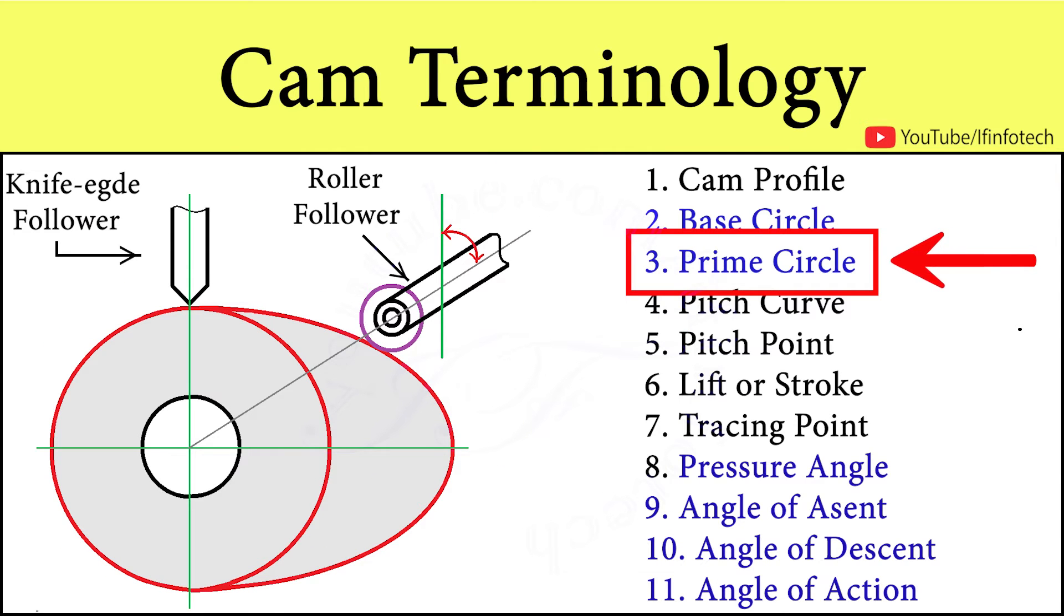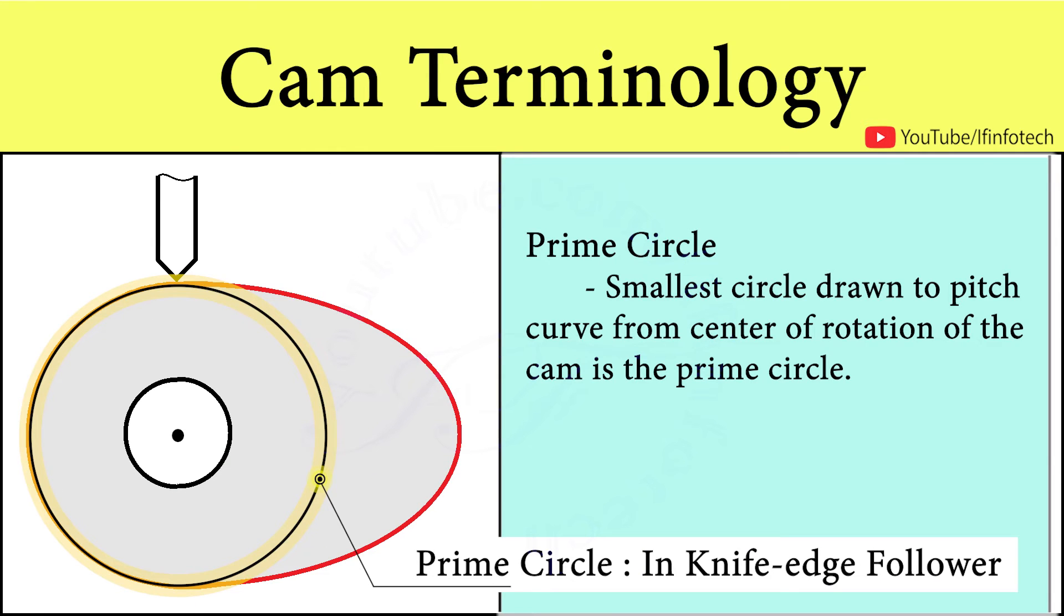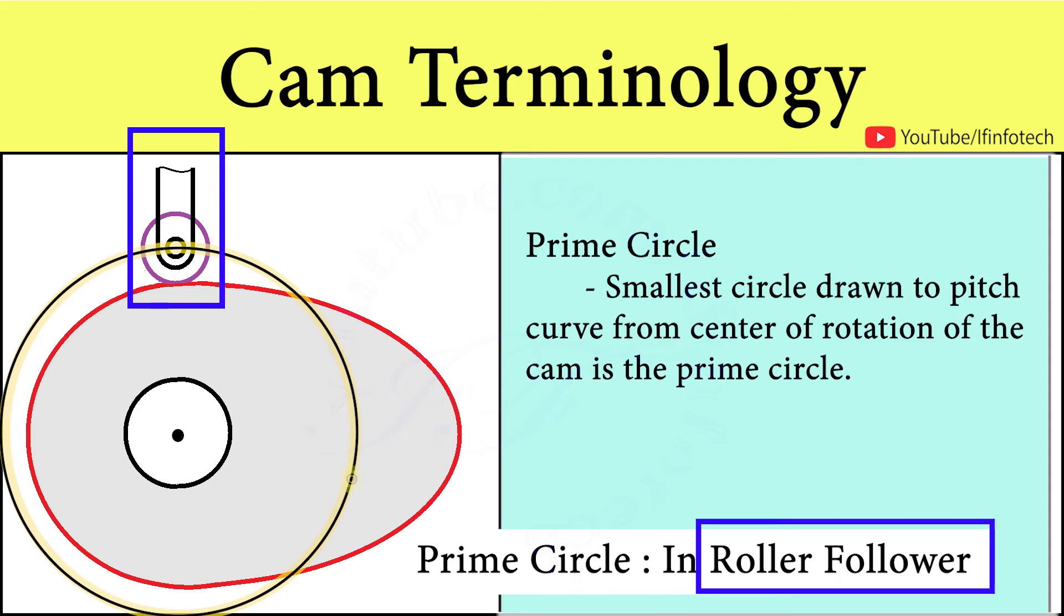Next is prime circle. Prime circle is the smallest circle drawn to pitch curve from center of rotation of cam. In knife edge follower, base circle and prime circle are same. In roller follower, radius of prime circle is the sum of base circle radius and radius of roller.